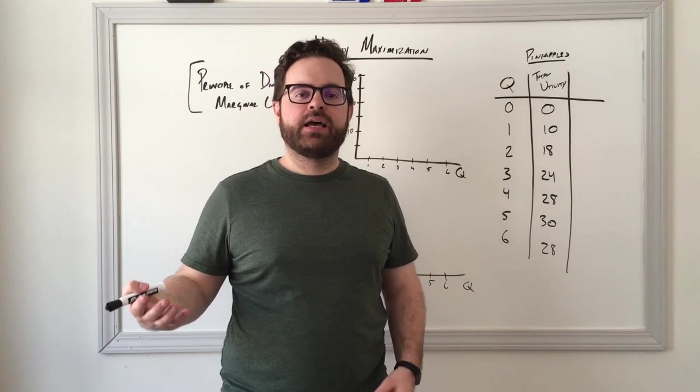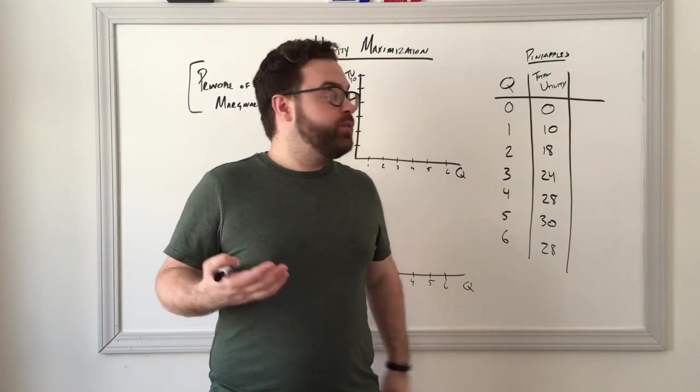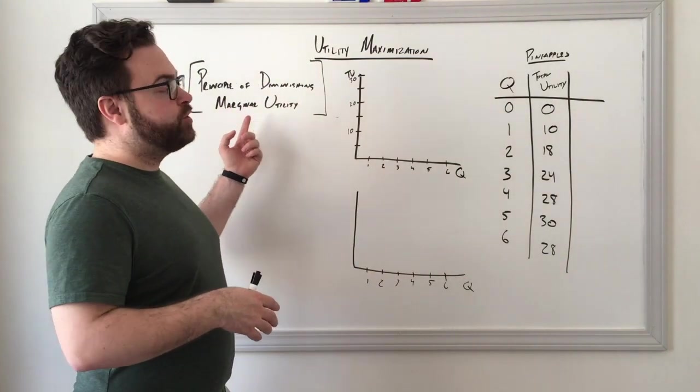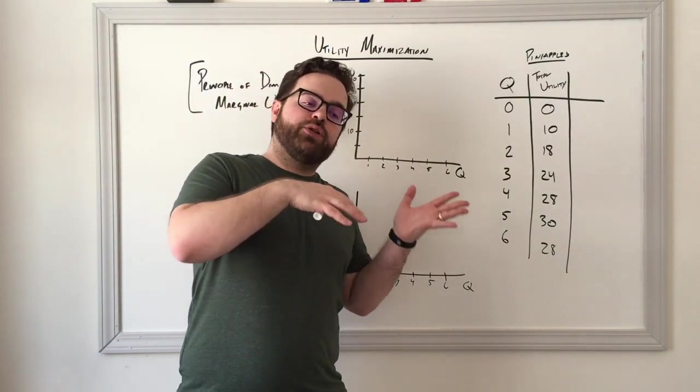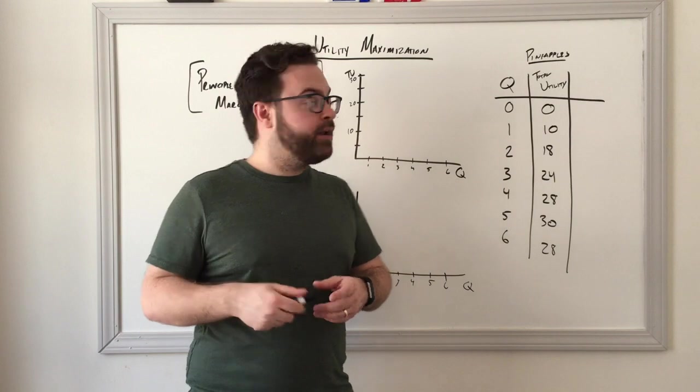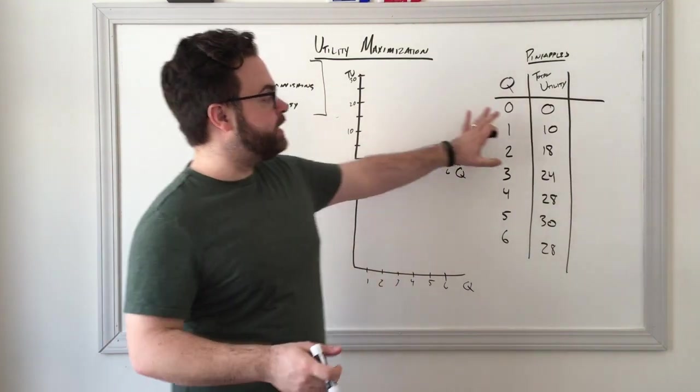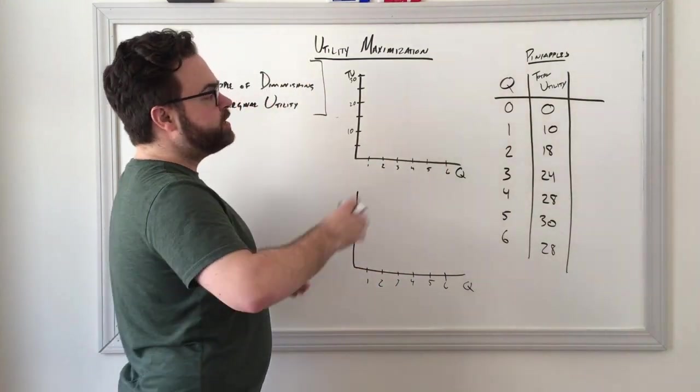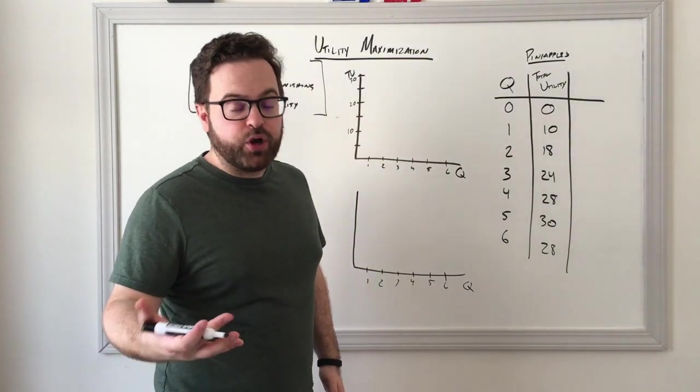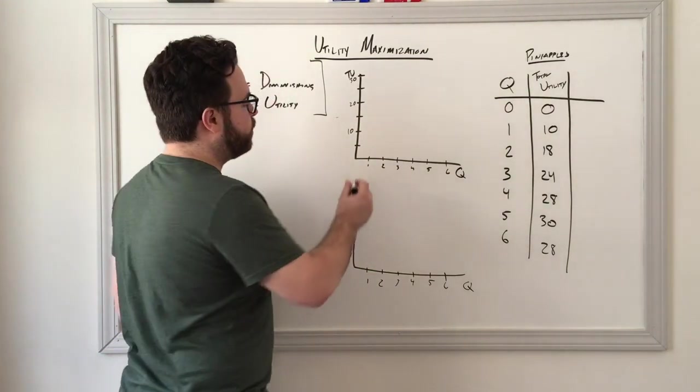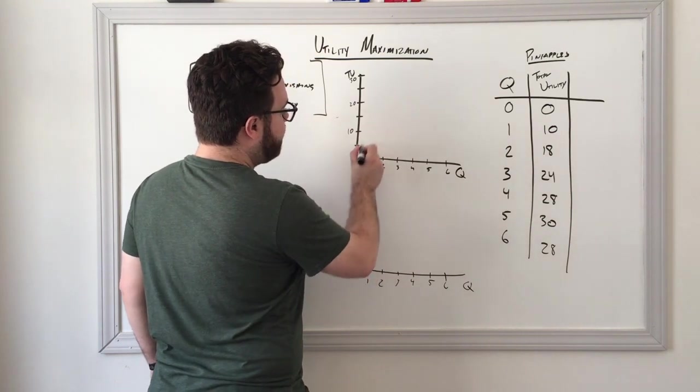This concept of diminishing marginal value or diminishing marginal utility applies both on the consumer and the producer side. Very simply, if we were to take this data and plot it, we would see that the total utility curve, much like the total revenue curve or many other total curves, starts by going up.